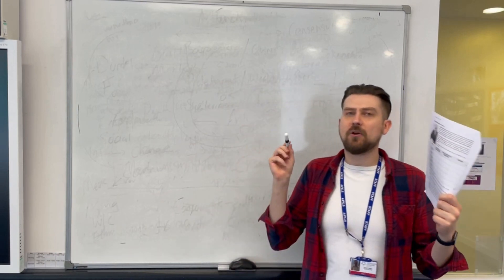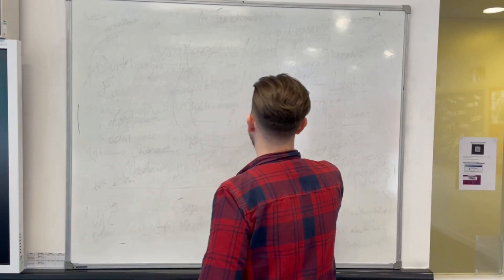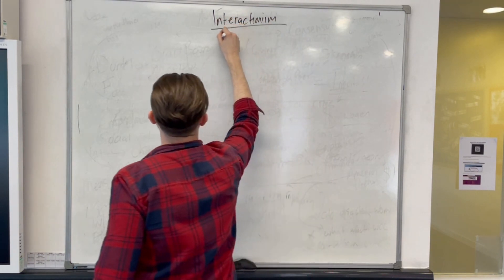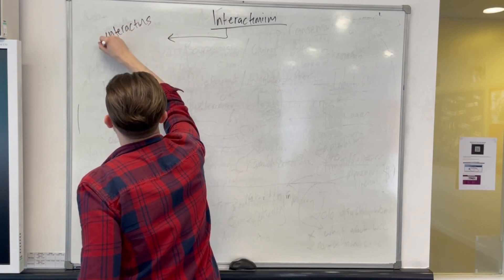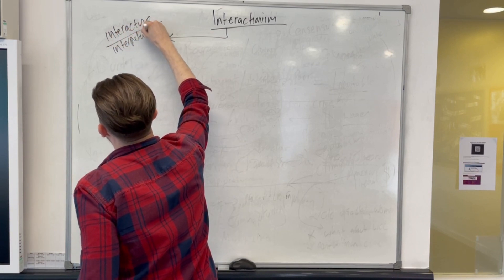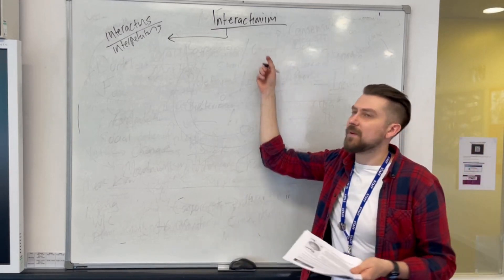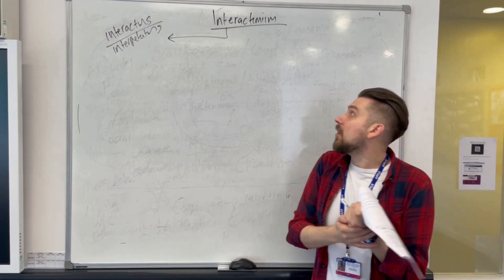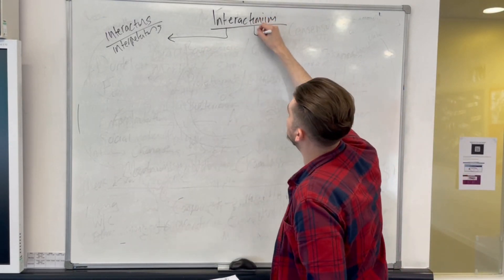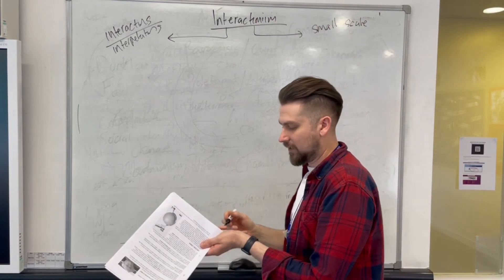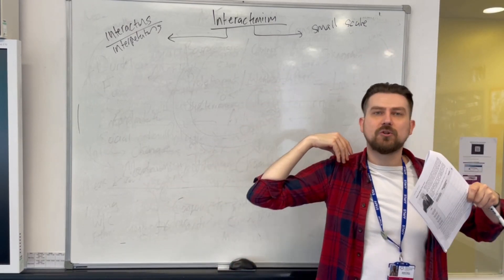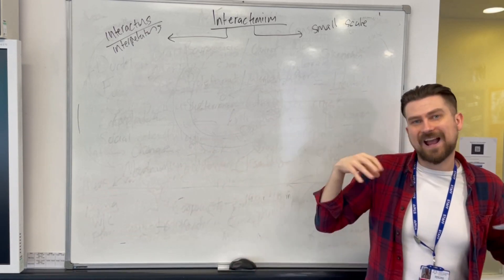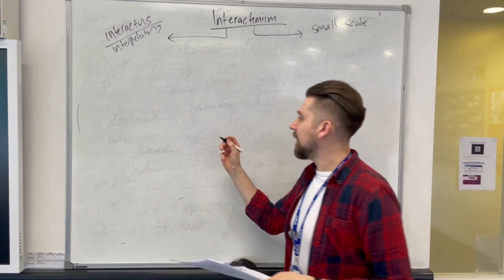We are going to be looking at AC 2.3 sociological theories on crime, focusing now on interactionism. To give you a bit of grounding, interactions and interpretations are going to be key for the interactionist perspective. Unlike Marxism and Functionalism, which look at big-scale social structures like the class system, interactionism looks on the small scale — concerned with individuals and their responses to stimulus, and the way they interpret the world around them.